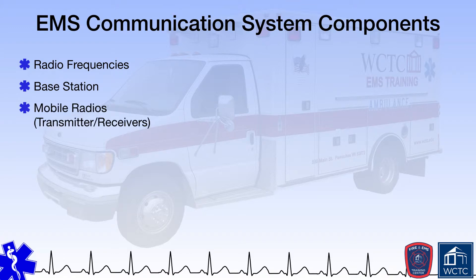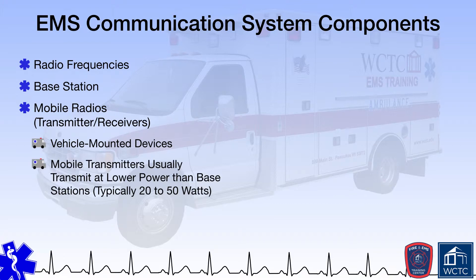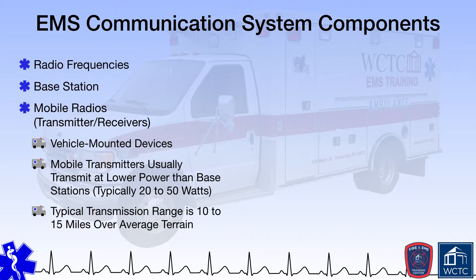Mobile radios are the next component of a typical emergency response agency's communication system. These radios are vehicle mounted and transmit at a lower wattage than base stations. A mobile radio may use 20 to 50 watts of power, while a base station by comparison may be in excess of 275 watts. Given this reduced wattage, a mobile radio typically has a transmission range of 10 to 15 miles over average terrain.